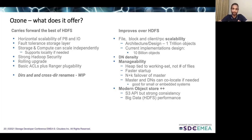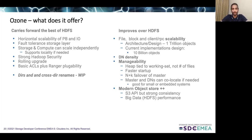There is faster startup compared to HDFS. In HDFS, the name node has to load the entire namespace in memory before it can start accepting requests, which can lead to a considerable amount of time required for startup. Whereas in Ozone, since it only holds a working set in RAM, startup is much quicker. Ozone can also support N+K failover of master, and master and data nodes can be co-located if needed. Ozone provides accessibility using the S3 API but also provides strong consistency guarantees.